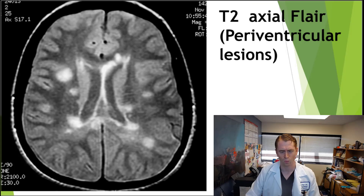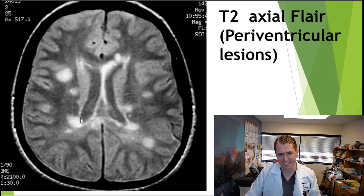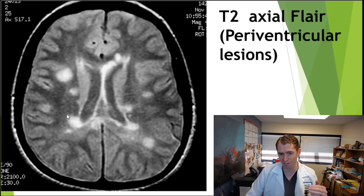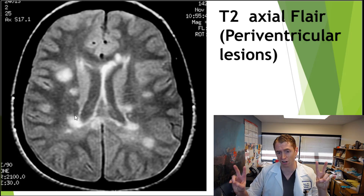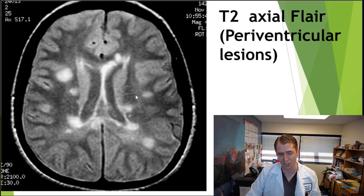Let's start by looking at features which are typical of MS on MRI scans. We'll start with this axial image going through the brain. You can see the skull on the outside and the fluid-filled spaces, the lateral ventricles. And these lesions which are periventricular — in other words, they touch the ventricles.